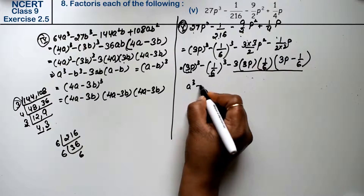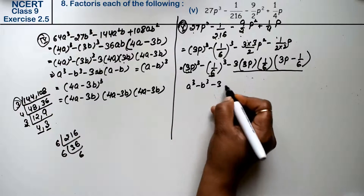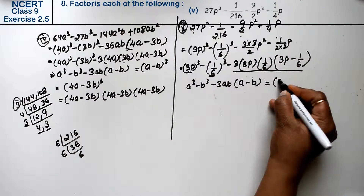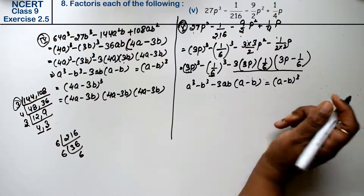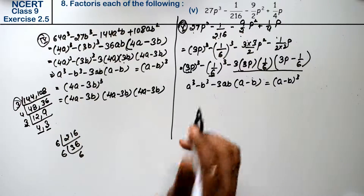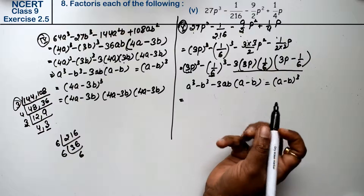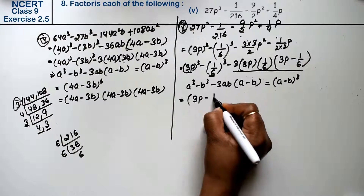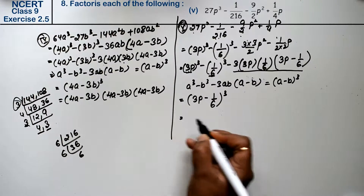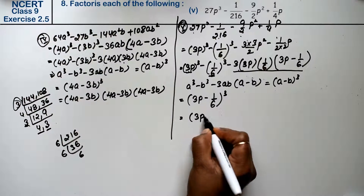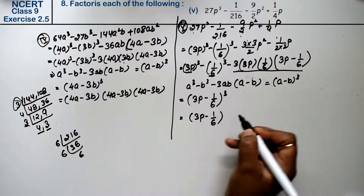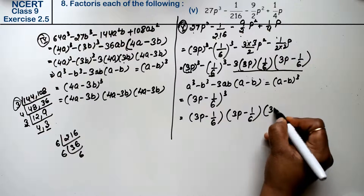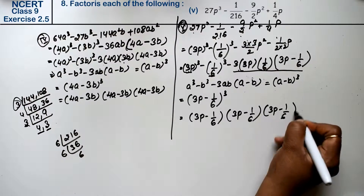Now see — a cube minus b cube minus 3ab into (a minus b) is the formula for (a minus b) whole cube. You will see this in the exam. So this is (3p minus 1/6) whole cube. So what can I write? (3p minus 1/6) and (3p minus 1/6) and (3p minus 1/6) is the answer.